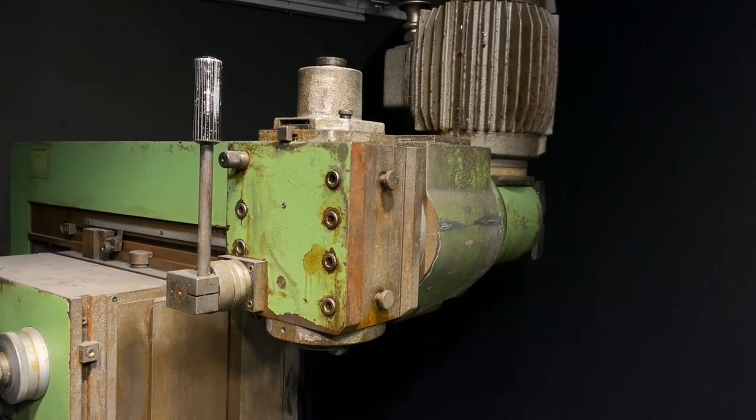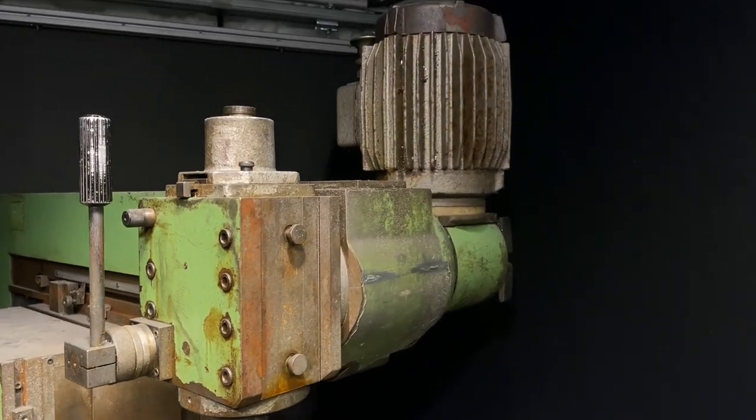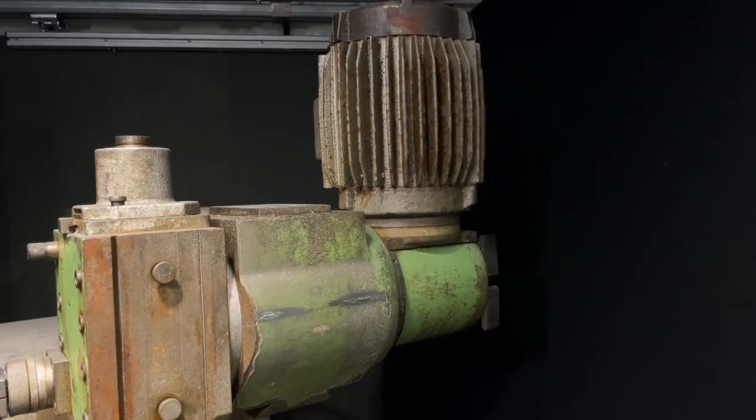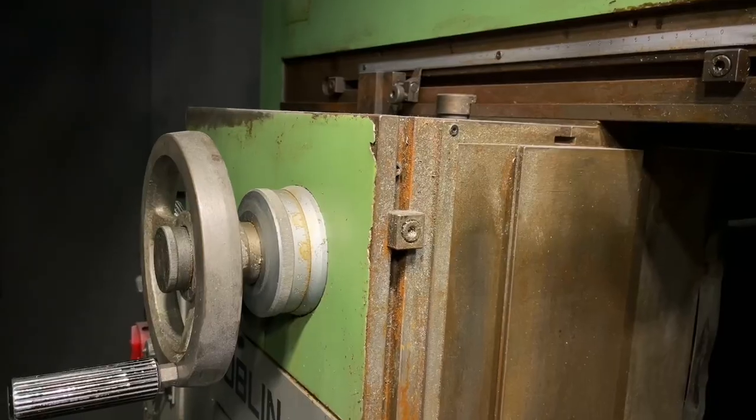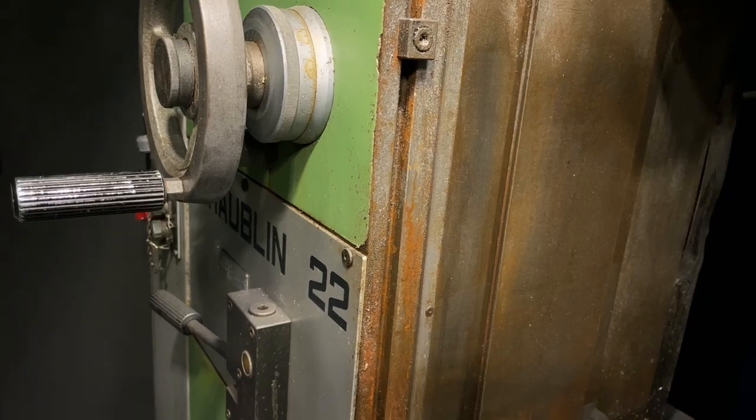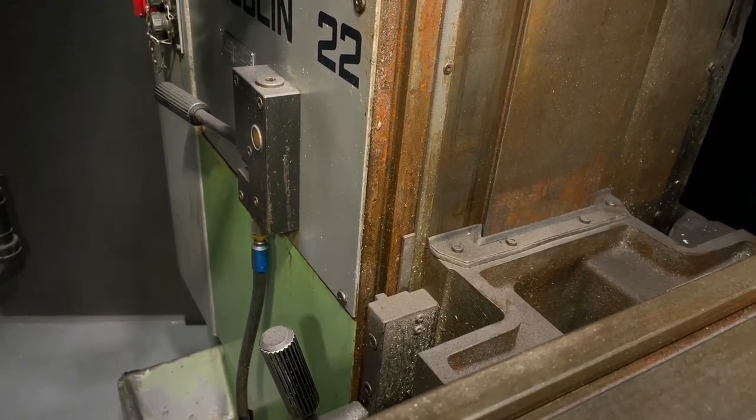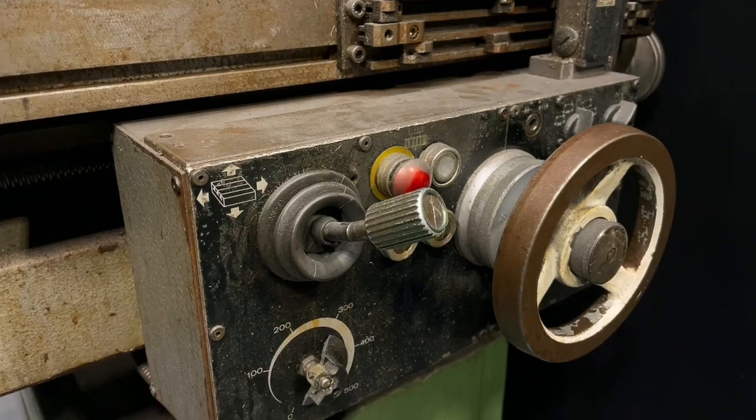This is a Schaublin 22 milling machine. I bought this machine as the long-awaited replacement for the mini mill which I'm currently using. The machine was in a bad enough shape that I could afford it.